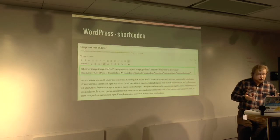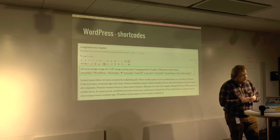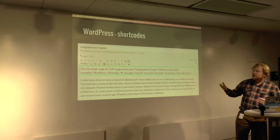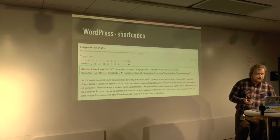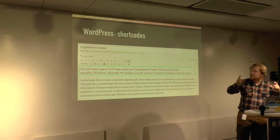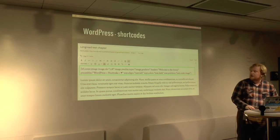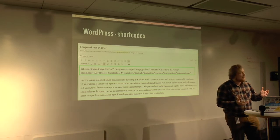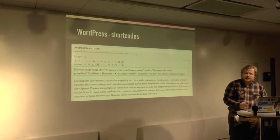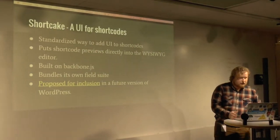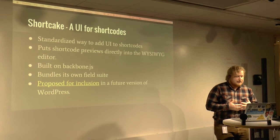WordPress also has shortcodes, which many people have used. Basically it's a special token you put into the text content, and when the page is shown that token gets replaced with something. The gallery shortcode is a perfect example — just bracket, 'gallery', then the IDs of the images you want, then closing bracket — and WordPress has a helper so you don't need to manually type it. Once you view the page, it renders a beautiful gallery. But what about other shortcodes for richer snippets like video or interactive graphics? That's what Shortcake lets us do.